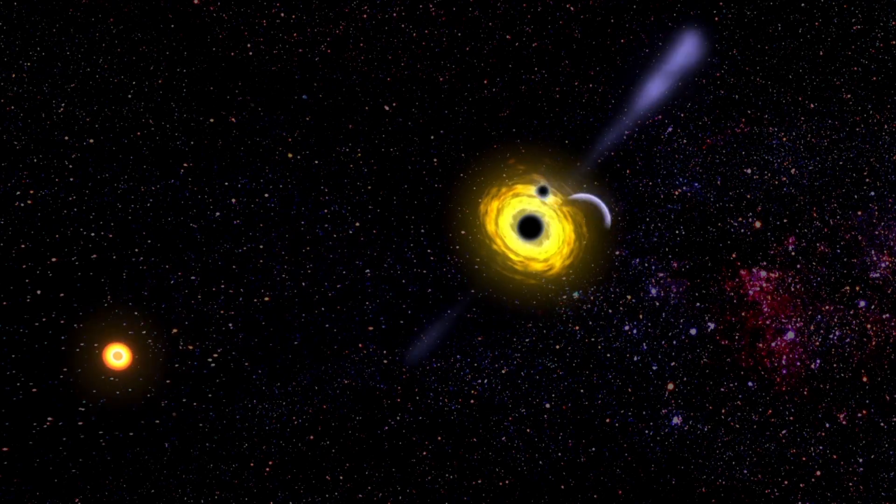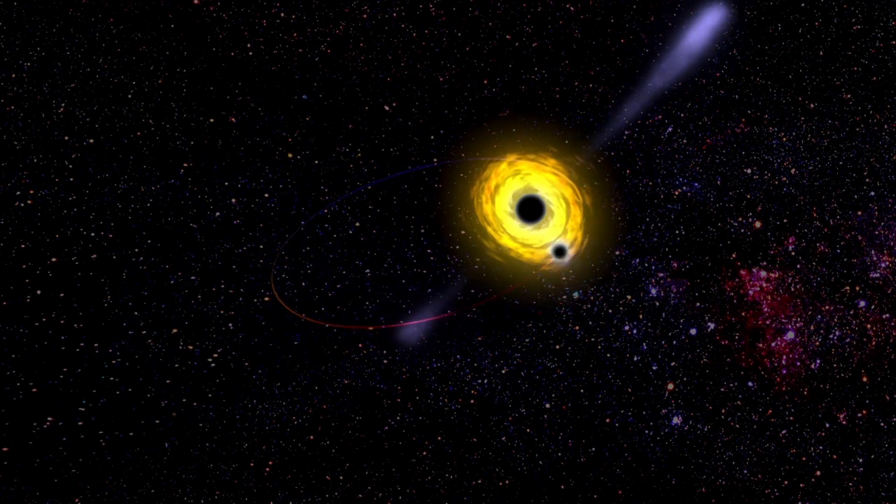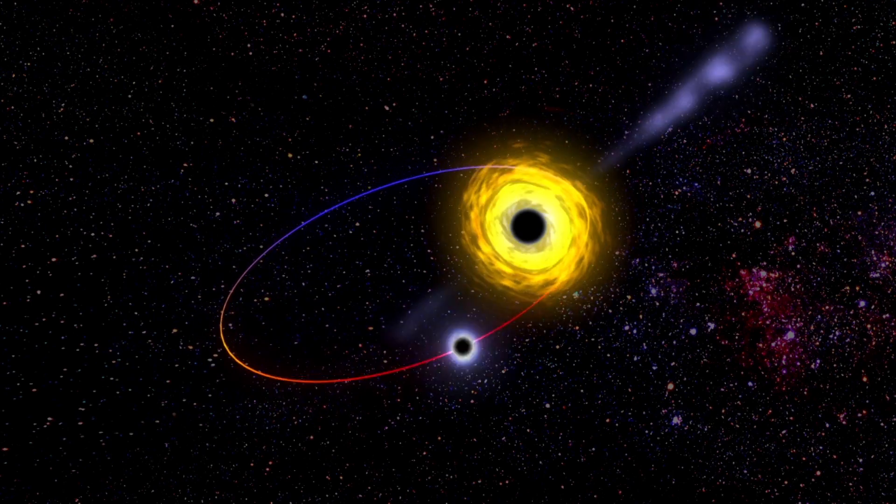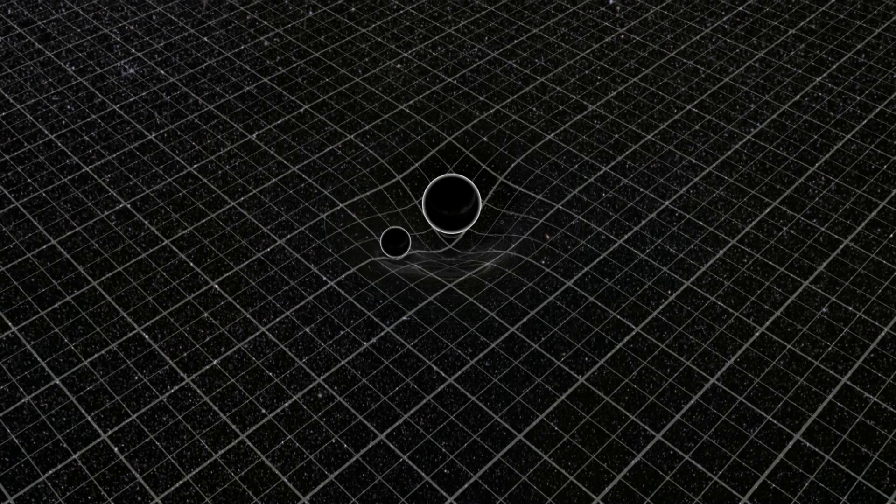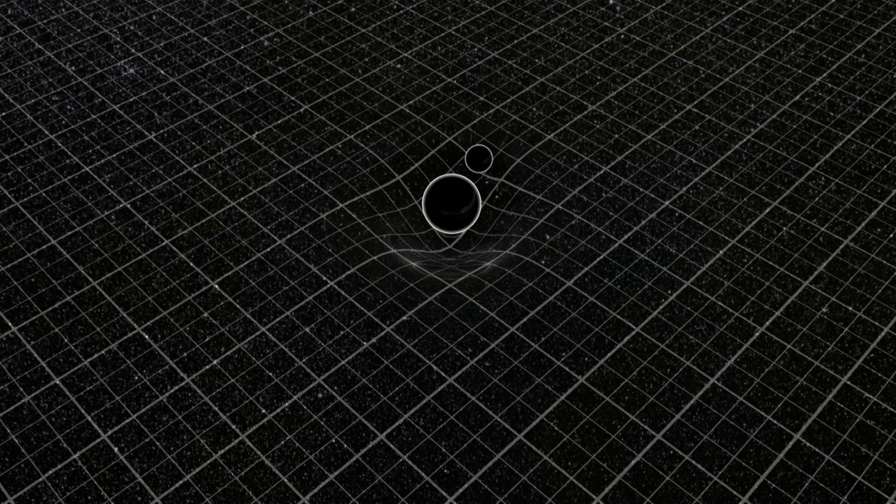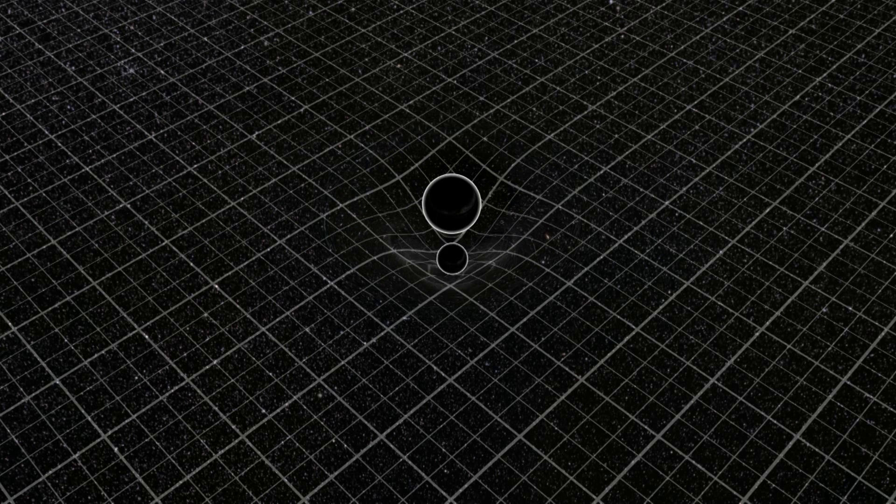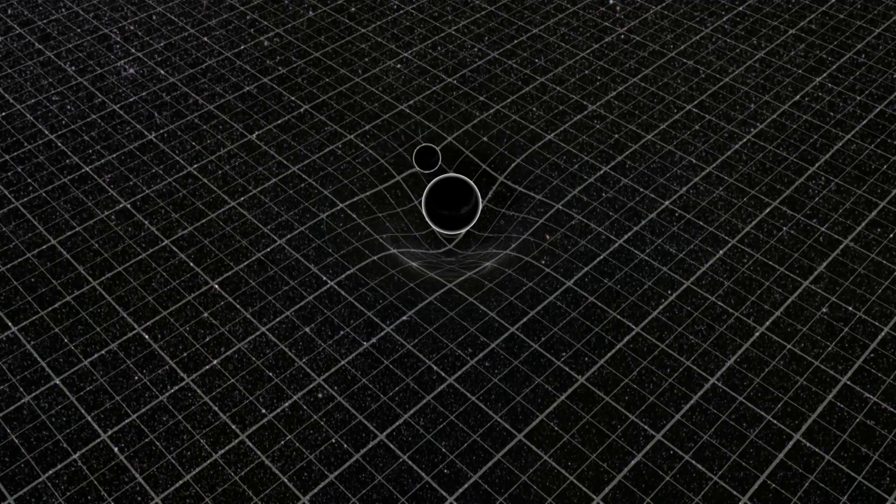Gravitational waves are created by massive systems moving close to the speed of light. But the changes they make in space-time are incredibly small. Albert Einstein predicted the existence of gravitational waves in 1916 in his theory of general relativity. But he thought they would be impossible to detect.